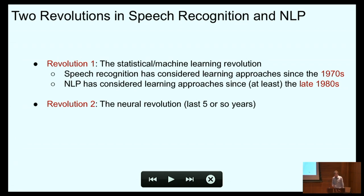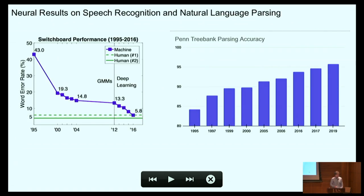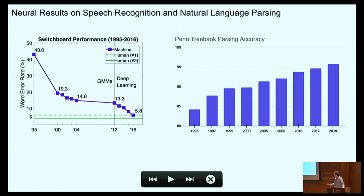The second revolution is the neural revolution, and you're all very familiar with this. Let me give you some concrete results on a couple of tasks. The first is speech recognition — performance on a benchmark task called Switchboard, which is pretty challenging conversational speech. There was rapid progress when the dataset was first released, things really plateauing, and then absolutely dramatic progress in the last few years using neural methods.